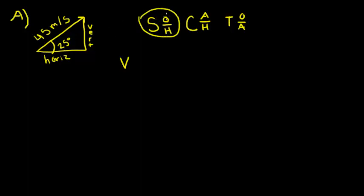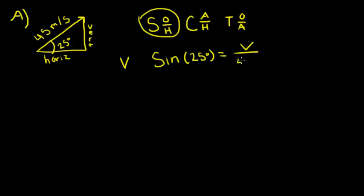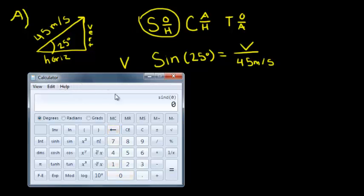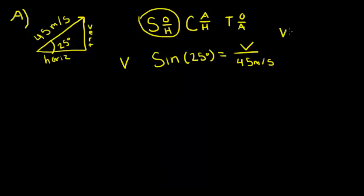Sine of the angle equals the opposite — which is what we're solving for — over the hypotenuse, which is 45 meters per second. We plug this into our calculator to solve for V. V equals 19.02 meters per second.